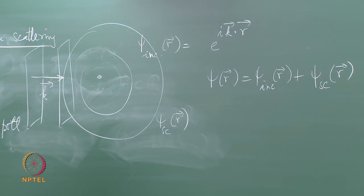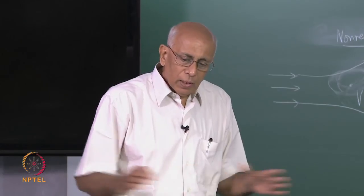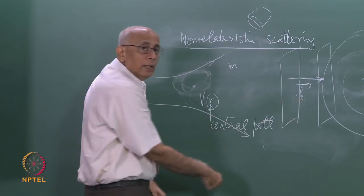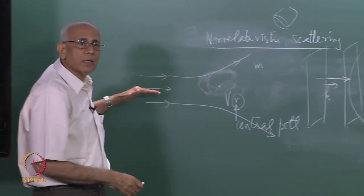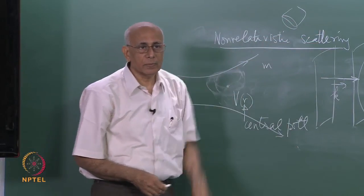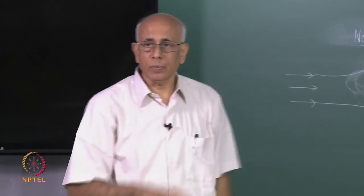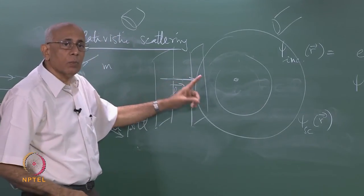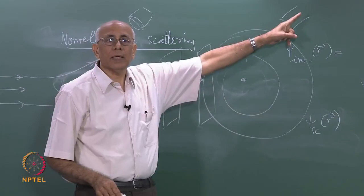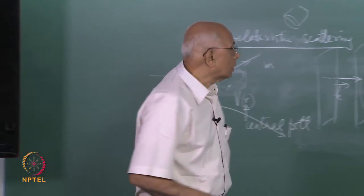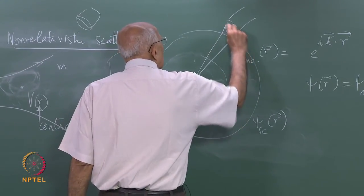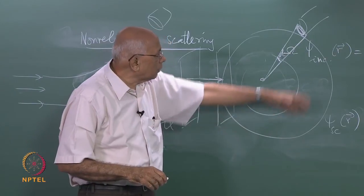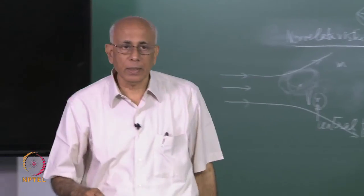We are going to try to compute what psi scattered of r is. Very far from the scattering center — in the classical case — I put detectors everywhere at all angles and calculate what fraction of the flux of incident particles falls into the detector at various solid angles. In the same way, I put detectors at various points and ask: for unit incident flux, what fraction gets scattered into a particular direction — some given solid angle? In spherical polar coordinates, what is the scattered flux into a little cone of solid angle d omega? This is the question.